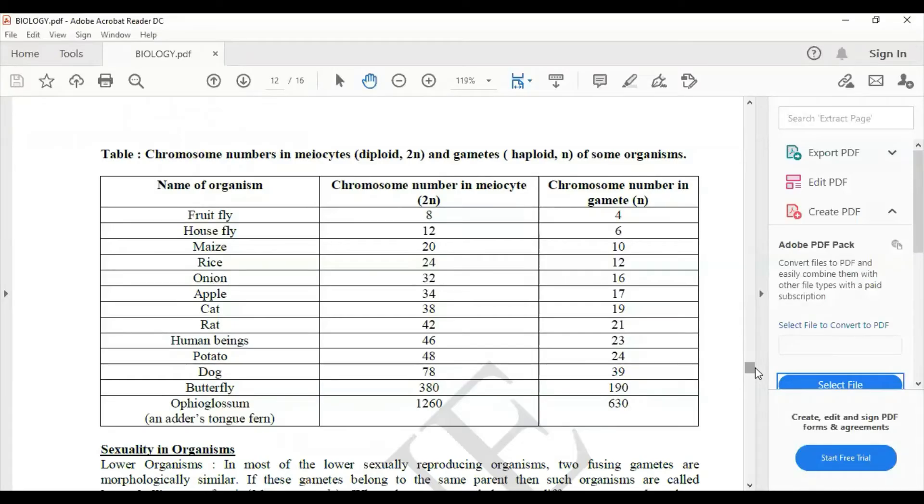To explain this in brief, for example fruit fly - if the complete chromosome is eight in number, then during gamete formation their chromosome would be four in one cell and four in another cell. So gamete formation would be half the chromosome or a single set of chromosome.